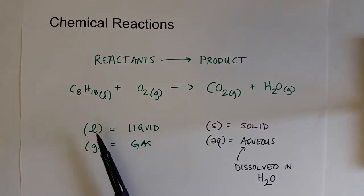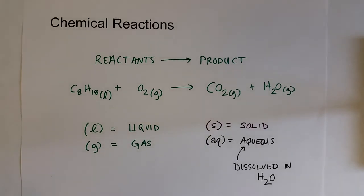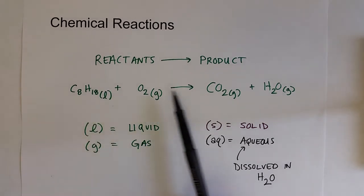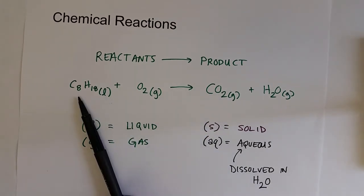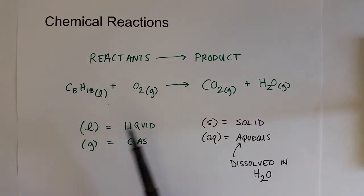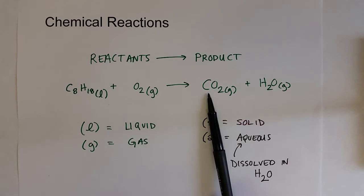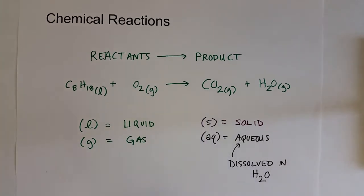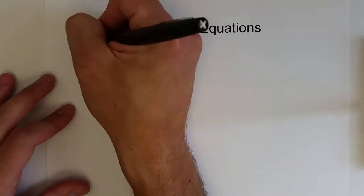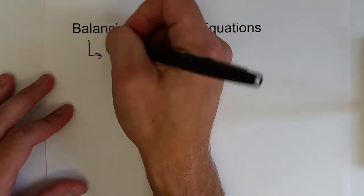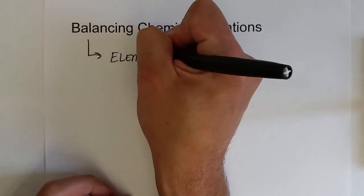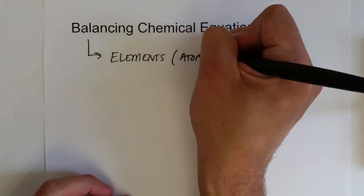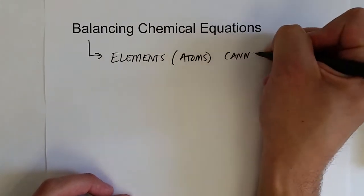One thing we definitely need to do is balance these chemical equations. Octane contains eight carbon atoms, but over here on the product side we have a molecule of carbon dioxide which only has one carbon atom. Where did the rest of those seven carbon atoms go? We need to balance that by adding coefficients to indicate that more than one carbon dioxide molecule is produced. This stems from the law of conservation of mass, which means that atoms cannot be created or destroyed in chemical reactions.